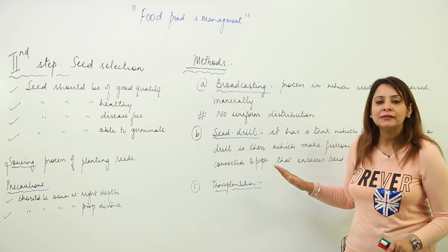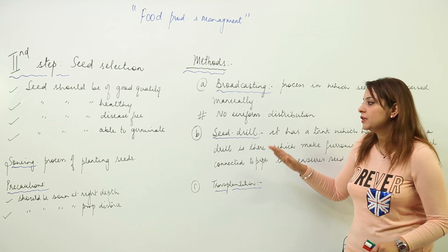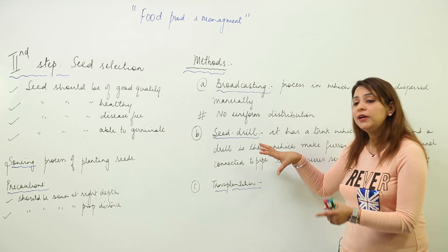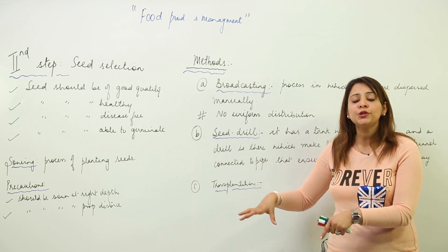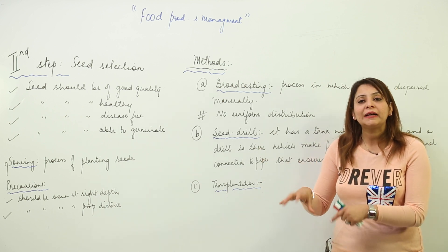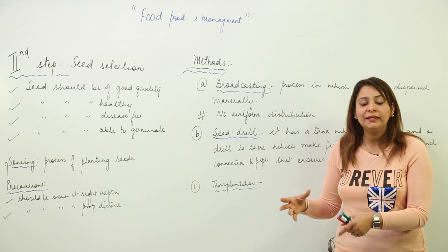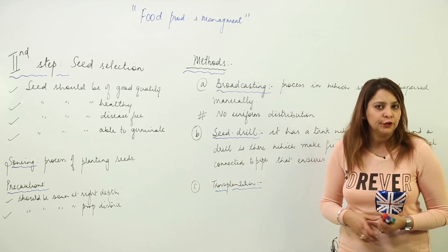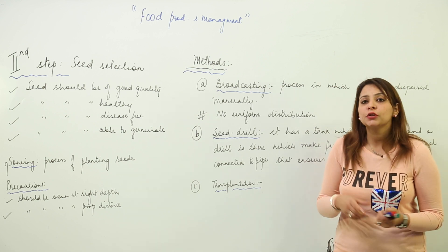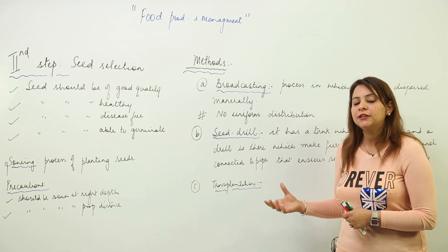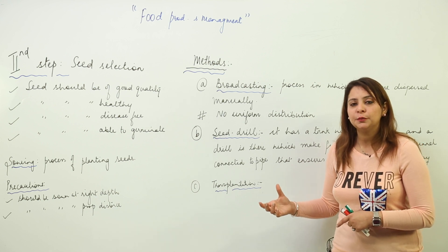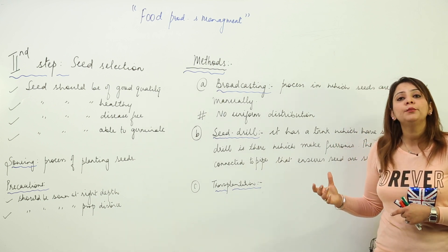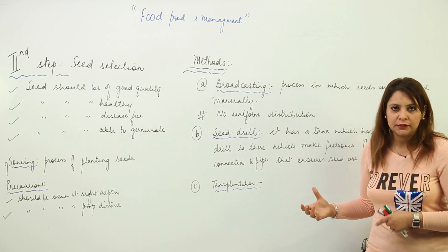So this is how seed selection and sowing is done. Once you are done with sowing, we move to the third agriculture practice — how we can improve soil fertility.